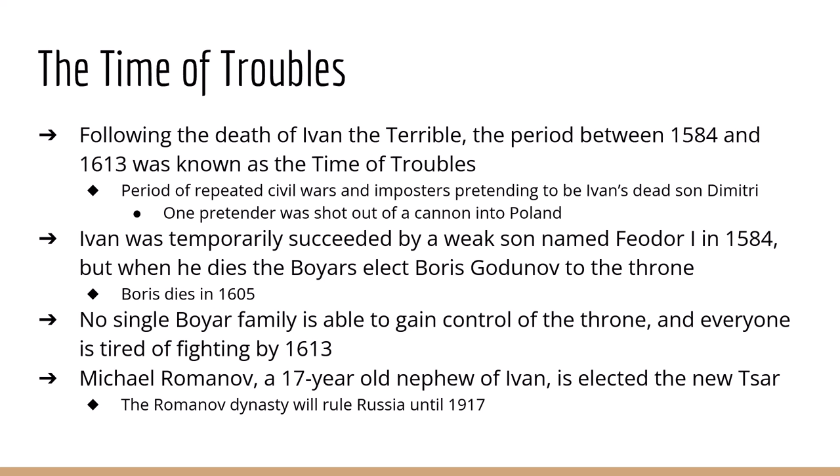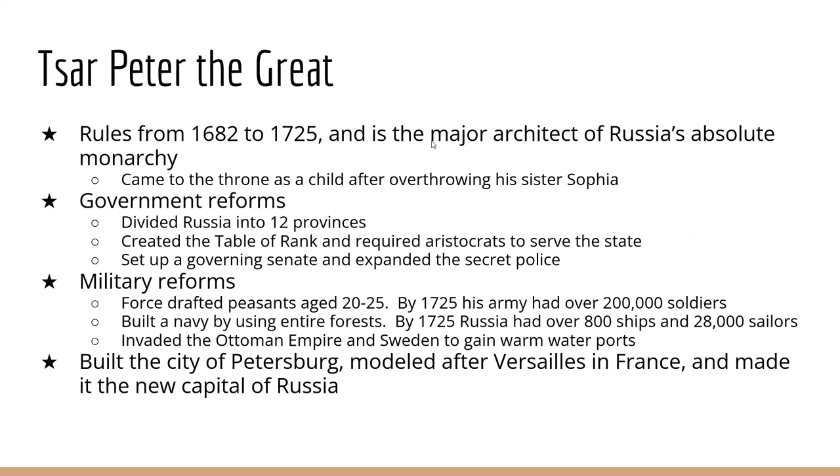When Theodore dies, the assembly of nobility — the boyars — elect a man named Boris Godunov to the throne. However, Boris Godunov dies in 1605, civil war breaks out, and no single boyar family can seize control. By 1613, everyone is exhausted, and the boyars agree to elect the 17-year-old Michael Romanov as the new Tsar. Michael Romanov was the nephew of Ivan the Terrible, and the Romanov dynasty he founded would exist all the way until the Russian Revolution of 1917.